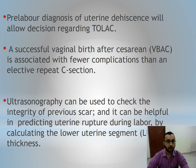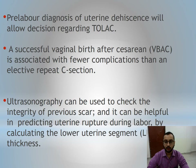Pre-labor diagnosis of LSCS will allow decision regarding trial of labor. A successful vaginal birth after C-section is associated with fewer complications than an elective repeated C-section. Ultrasonography can be used to check the integrity of the previous scar and it can be helpful in predicting uterine rupture during labor by calculating the lower uterine segment scar thickness.